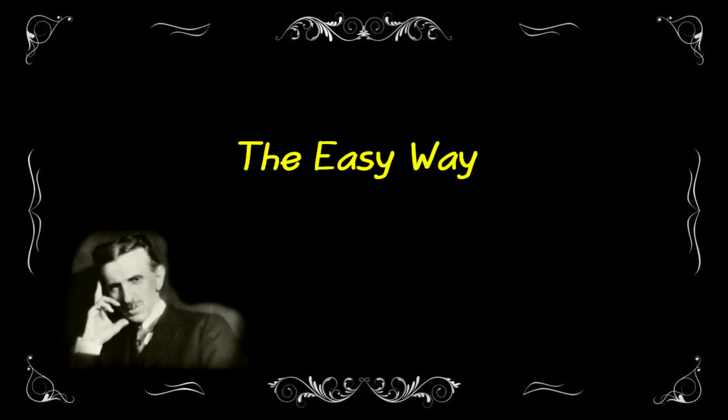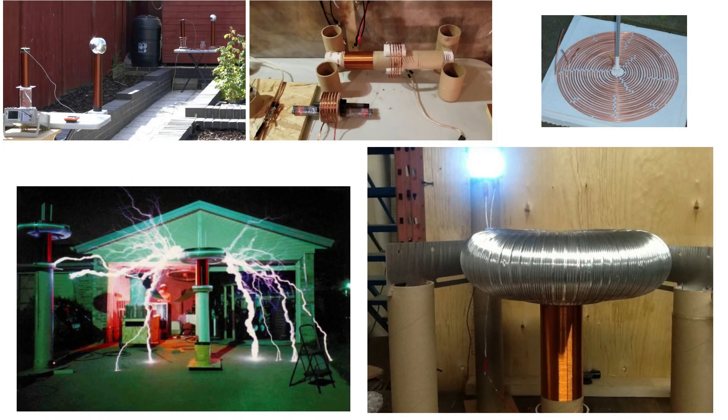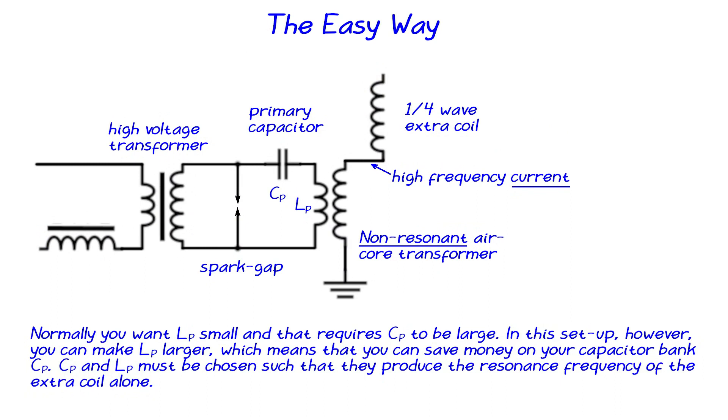When you search YouTube for magnifying transmitter, you will find many examples where people just added an extra coil to their Tesla coil and believe that now they have made a magnifying transmitter. Not only have they no clue about what a magnifying transmitter really is, they also do not get the extra coil in the way Tesla explains it. But their way does work and is definitely a lot easier and cheaper, as you can save a lot on your primary capacitors. This is how they do it.